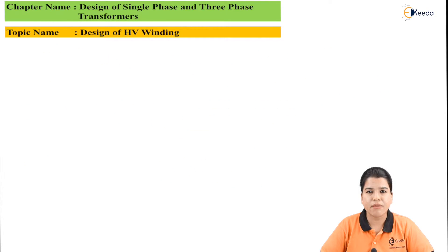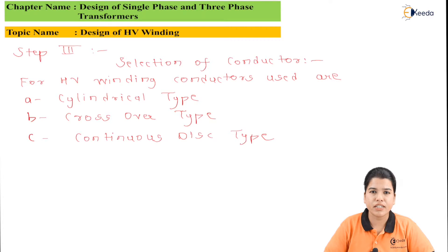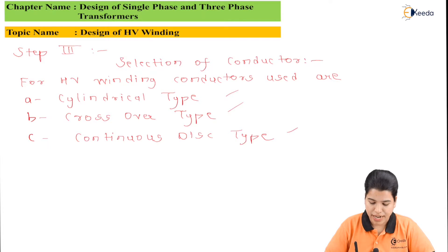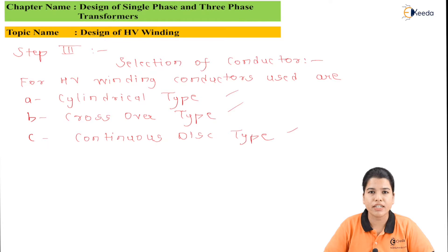The next step in designing the HV winding is to determine the conductor size. In the HV winding, three types of conductors can be used: cylindrical type, crossover type, and continuous disc type. Before selecting the conductor, the selection of winding type is very important, and the conductor is chosen depending upon the type of winding used for the HV side.